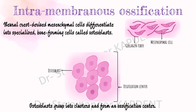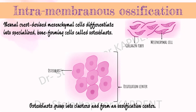Now that we understand that in intramembranous ossification the mesenchymal precursor directly transforms into bone, let's understand how. The neural crest-type mesenchymal cells first differentiate into a specialized bone-forming cell called the osteoblast. These osteoblasts group into clusters and form an ossification center.